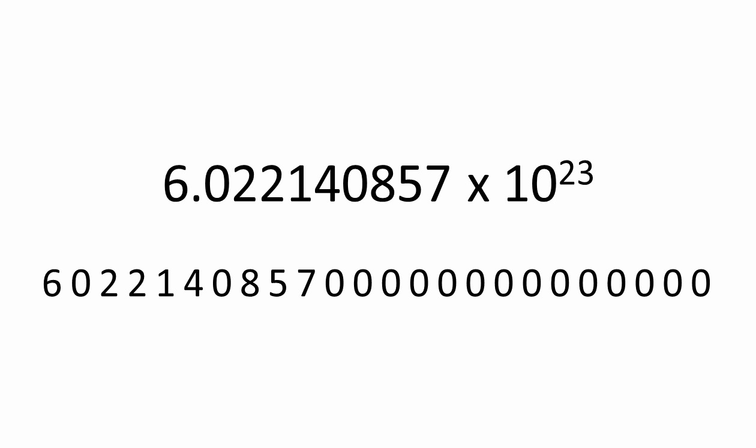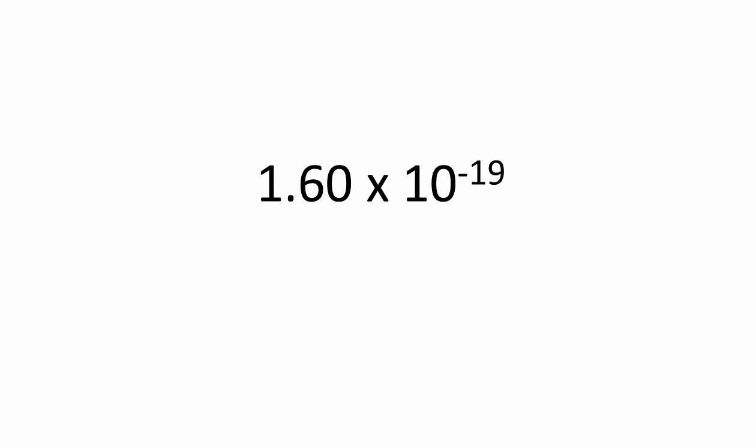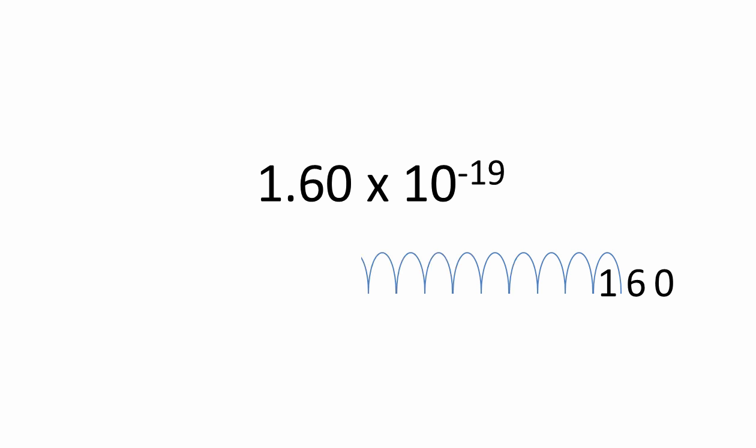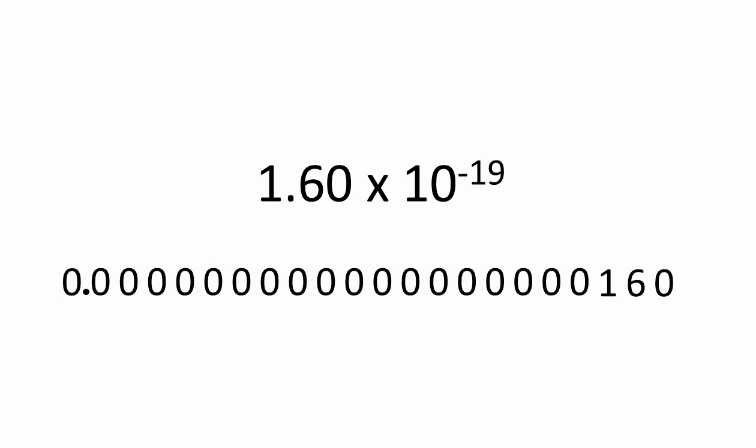The number of digits you're allowed to use in the mantissa governs the precision of the value written in this way. Similarly, the number of digits available for the exponent governs the range. With only two digits for the exponent, you wouldn't be able to float the point any more than ninety-nine places to the right. Here's the charge on an electron again — an example of a very small number. Notice that the exponent is a negative number, which means you have to float the decimal point nineteen places to the left to get a more familiar form. Clearly, this is a very small fraction indeed.